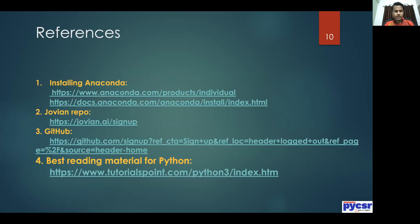Here are a couple of references you can take from this presentation. For how to install Anaconda, there's a link covering Windows, Mac, and Ubuntu. For Jovian repo, here is the sign-up link, and for GitHub repo you can also sign up there — I'll cover how to set up your environment in the next video. For the best reading material for Python, tutorialsfind.com has not only Python 3 but every other programming language you can think of.